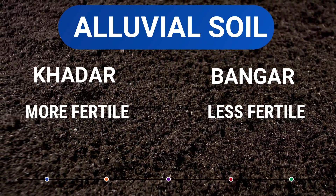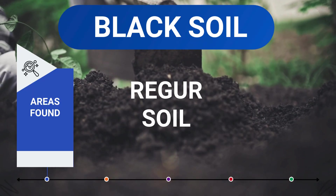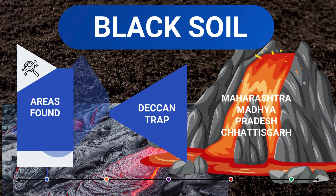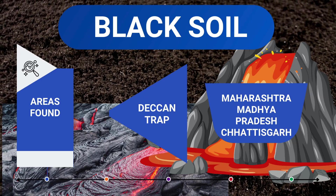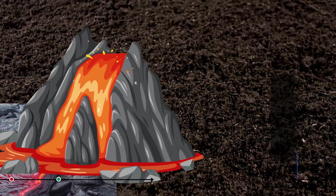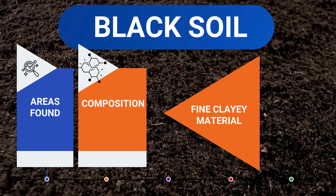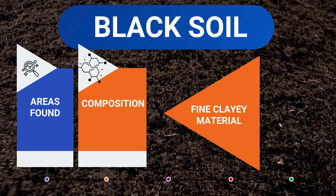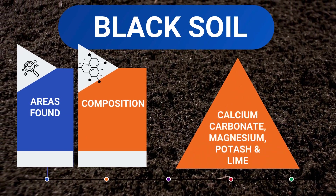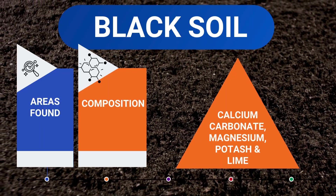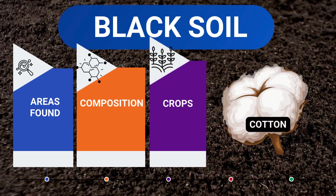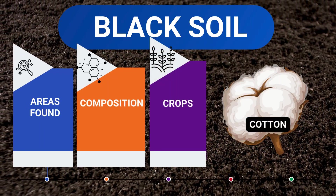The next soil type is Black Soil, which is also called Regur Soil. This is found along the Deccan Trap region of Maharashtra, Madhya Pradesh and Chhattisgarh. It is composed of fine clay material which contains calcium carbonate, magnesium, potash and lime. This black soil is also known as Black Cotton Soil because it supports cotton cultivation.